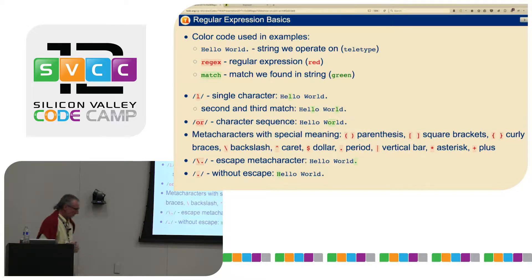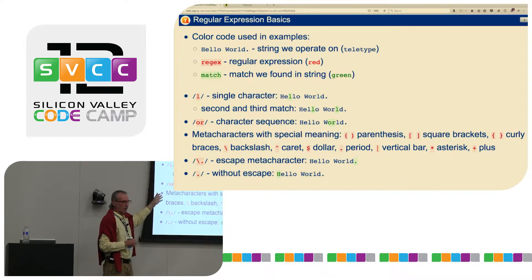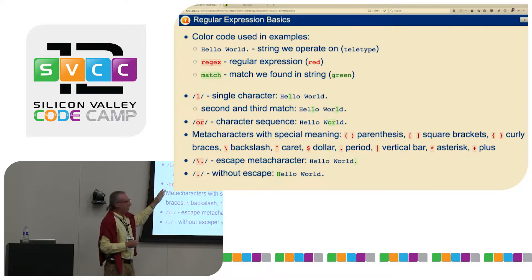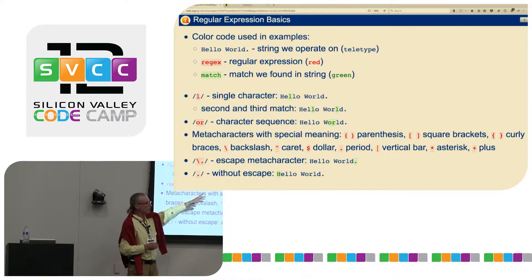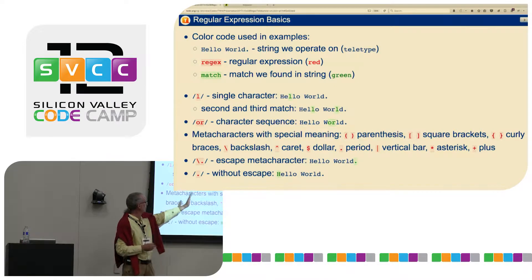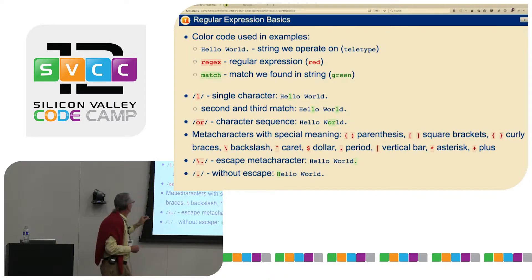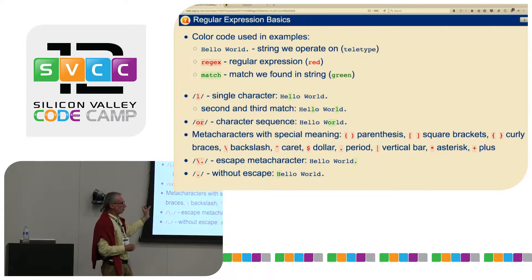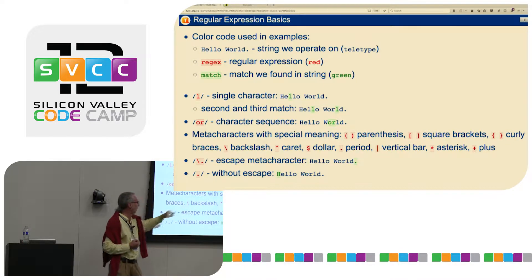So now let's dive into details. As a regular expression, if you just have a regular character like an L, it will match a single character — just that one character. So in the string 'hello world', it will match the first L. If you run it again, the pointer will point to the second L. If you have two characters like O and R, it will match these two characters verbatim — in 'hello world' it will match the OR in 'world'.